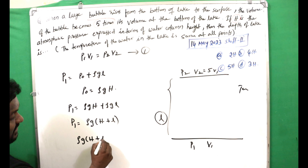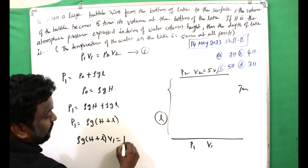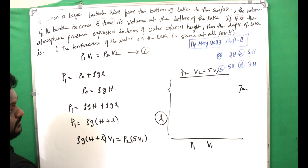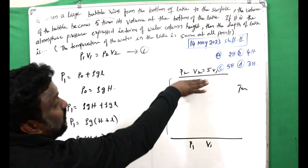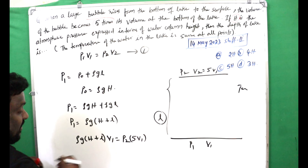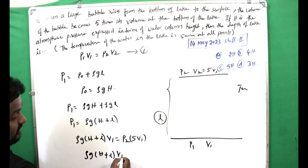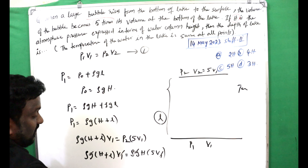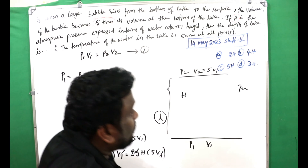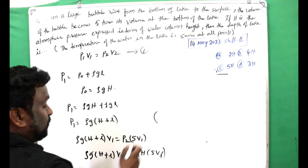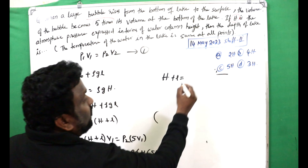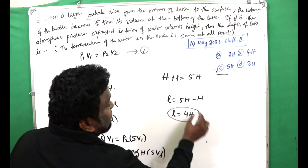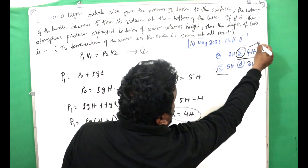So P1V1 = P2V2 becomes ρg(H + L) · V1 = P2 · 5V1. At the top surface, P2 equals ρgH. The V1 terms and ρg cancel, giving H + L = 5H. Therefore L equals 5H minus H, so L equals 4H. Option B is the correct answer.